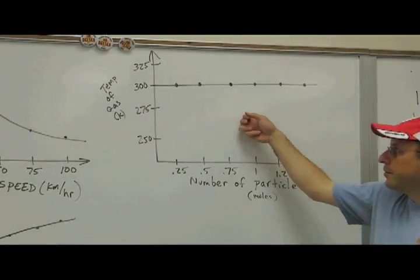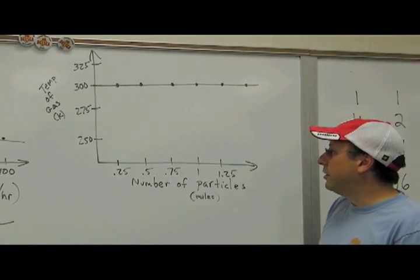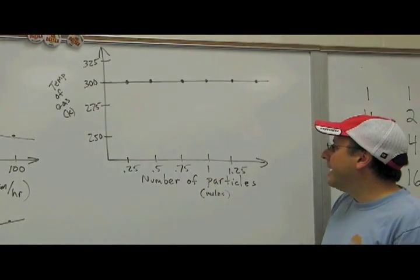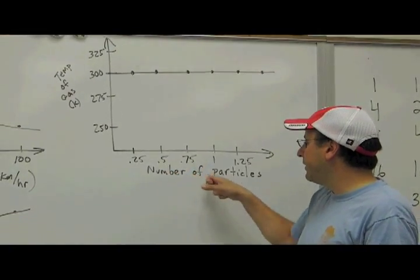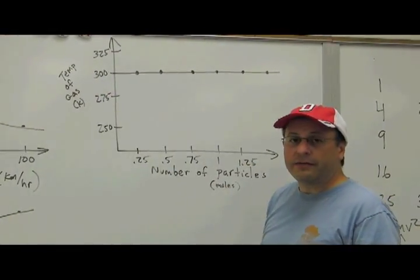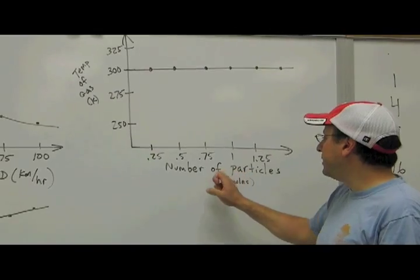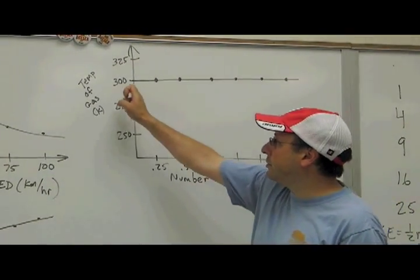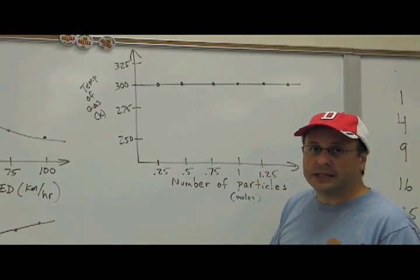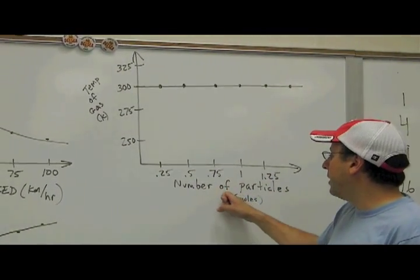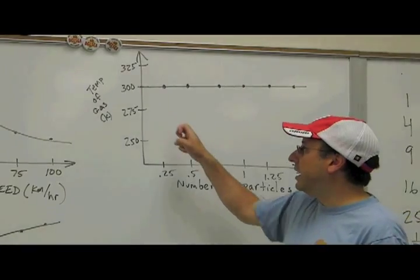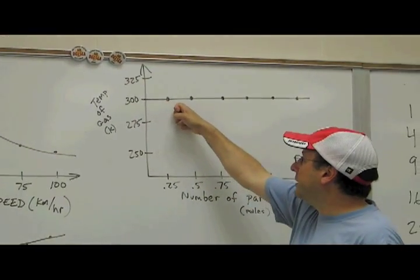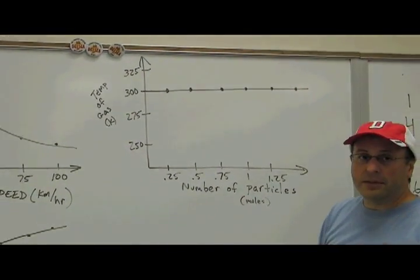The final type of graph is a no relationship graph, and that means that the x variable has no effect on the y variable. So in this case it doesn't matter how many particles of gas I have, the temperature of the gas is still going to be the same. So the number of particles does not affect the temperature. You can see that the value stays about the same the entire time.